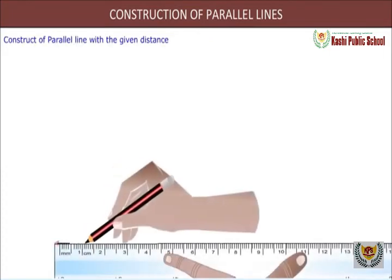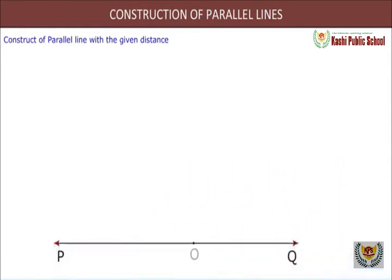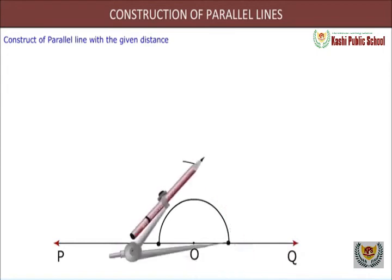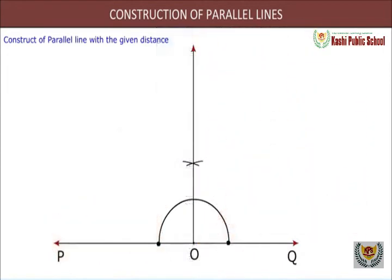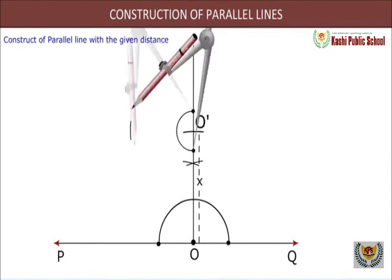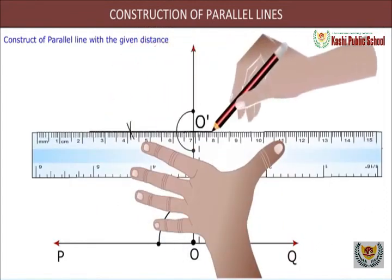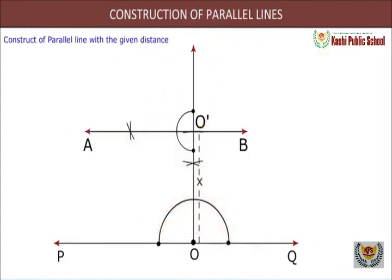Draw a line PQ. Draw a perpendicular on the line PQ which intersects PQ at O. Using compass with O as center, mark x centimeter on the perpendicular line as O'. Draw a perpendicular on the point O'. Name this line as AB. Therefore, line AB and PQ are parallel lines.